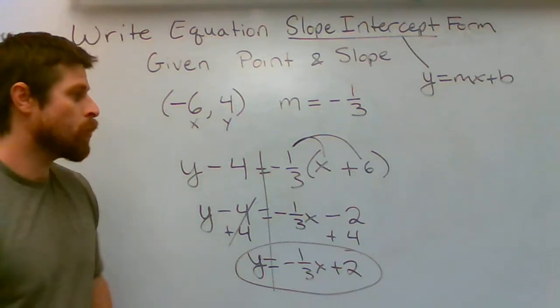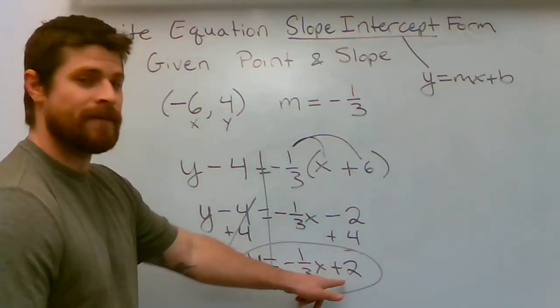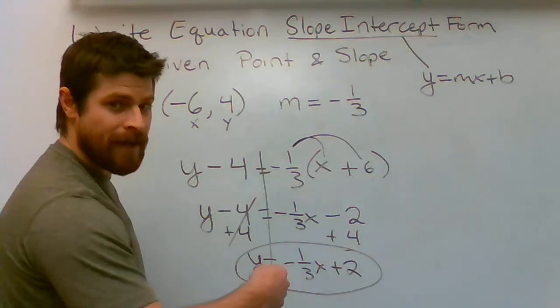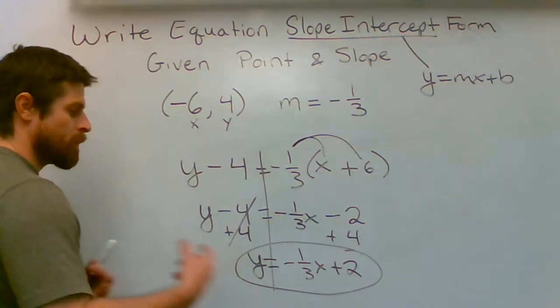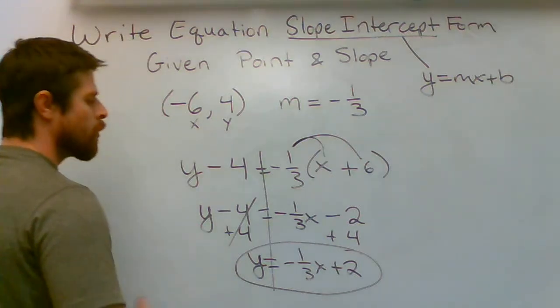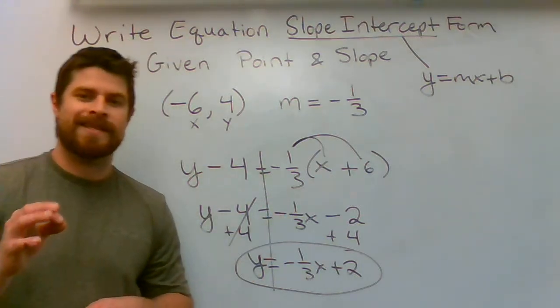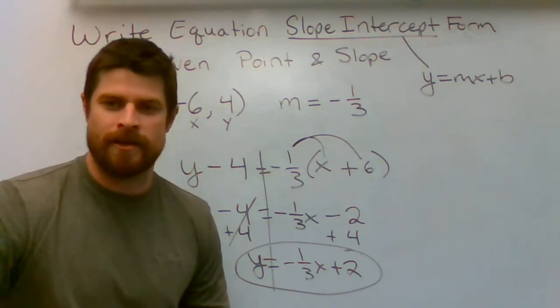So what do we know about this line? We know that it's going to cross at positive two on the y-axis. We know that it's negative, so it's going to be going down one over three between every point. So we have a lot of information that we just gathered from this. Hopefully it all makes sense to you. Study hard and good luck on your upcoming test.